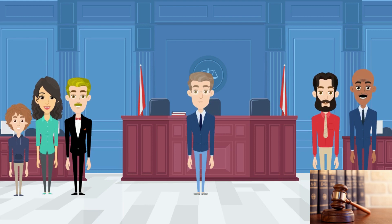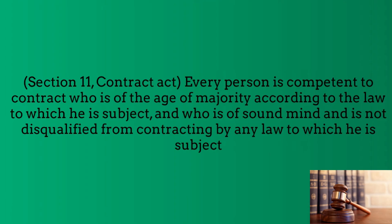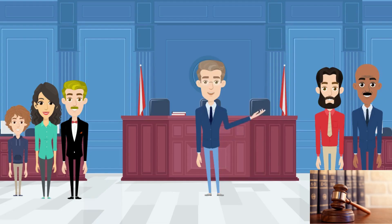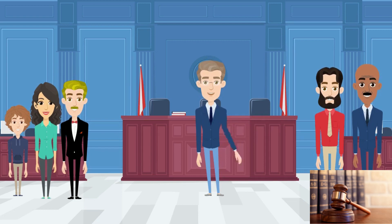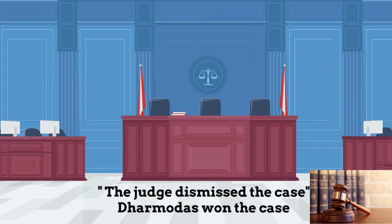Dharamotas misrepresented his age; his agent will have to repay the sum if he cancels the mortgage. Any contract entered with a minor is void, and Dharamotas is a minor, which means that the money lender cannot recover the amount advanced to Dharamotas because the contract is not valid.